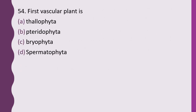Question 54. First vascular plant is: thallophyte, pteridophyte, bryophyte, or spermatophyte. The correct answer is option B, pteridophyte.